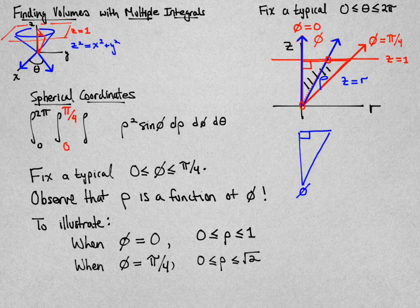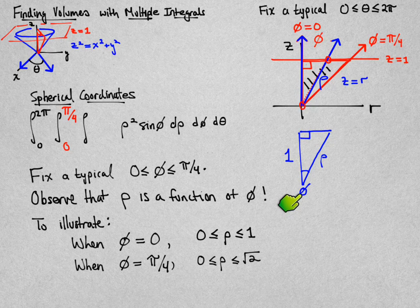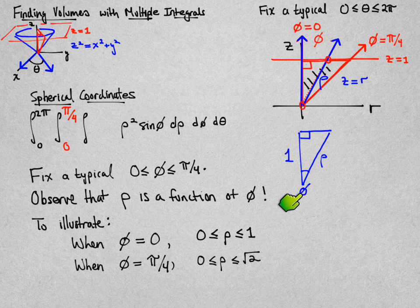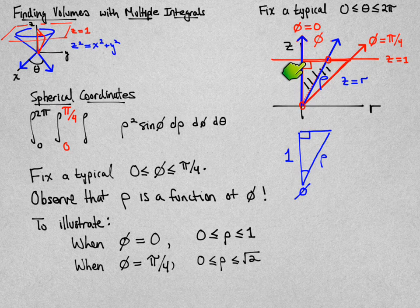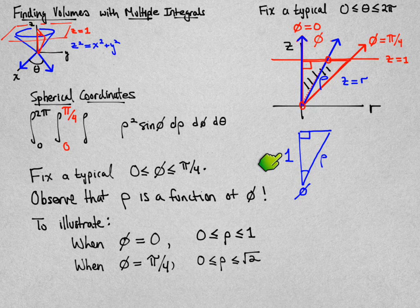For values of phi in between 0 and pi over 4, that length will be some number between 1 and square root of 2. What I've done here is taken that typical value of phi, that blue angle here, and I'm thinking about the triangle that it forms, this right triangle down below. The upper leg of it is always 1. That doesn't change. The top of the cone is always equal to z equal to 1, so this side is always 1.